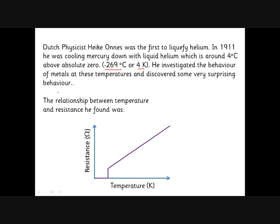What he found was very surprising: the resistance went down and down, but then suddenly around four Kelvin it dropped to zero. This was the discovery of superconductivity. At a temperature called the critical temperature, resistance suddenly becomes zero — a quantum effect. Electrons travel through the metal without losing any energy, so a voltmeter across a superconductor reads zero volts.